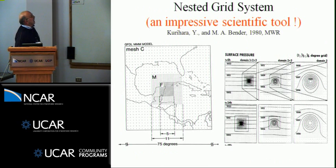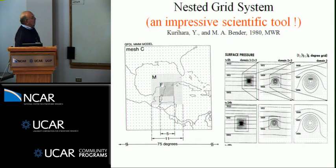Here's the nested grid system, which is an impressive scientific tool — and I'm bragging mainly on Curry's part. By using this grid system with three grids, the operational system today still uses this same framework — it's just doubled in resolution. Instead of one, one-third, and one-sixth degree, we now have one-half, one-sixth, and one-twelfth degree. This runs very efficiently. We started developing this tool when we didn't have a distributed memory machine, so we had to convert it at one time.